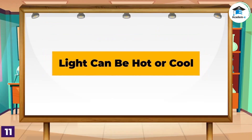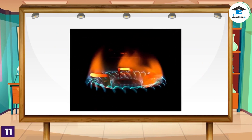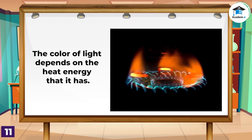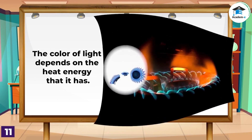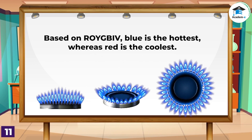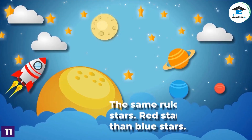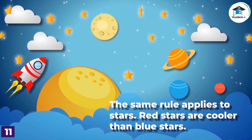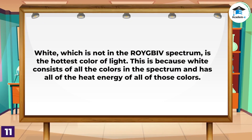Light can be hot or cool. Do you wonder why a flame has different colors such as red, orange, and blue? The color of light depends on the heat energy it has. Based on the order of ROYGBIV, heat energy increases from red to violet, so the temperature of colors of light also increases from red to violet. Among red, orange, and blue colors of a flame, blue is the hottest and red is the coolest. The same rule applies to stars — red stars are cooler than blue stars. White, which is not in the ROYGBIV spectrum, is the hottest color of light because white consists of all the colors in the spectrum and has all of their heat energy combined.